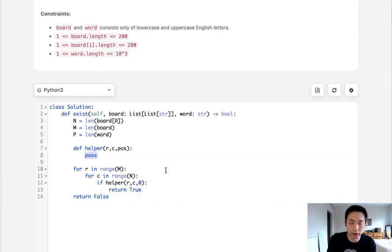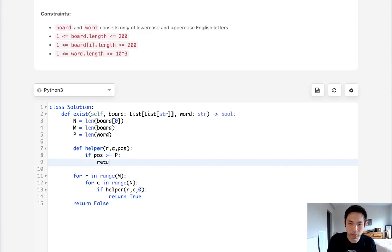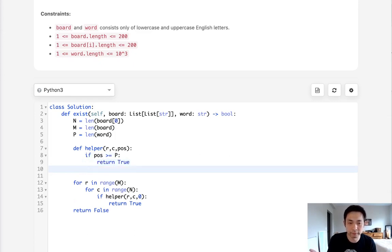Now let's write our helper method. What's our base condition? As I said before, that's going to be if the position is greater or equal to p, we can return true because we've found that we could create this word.